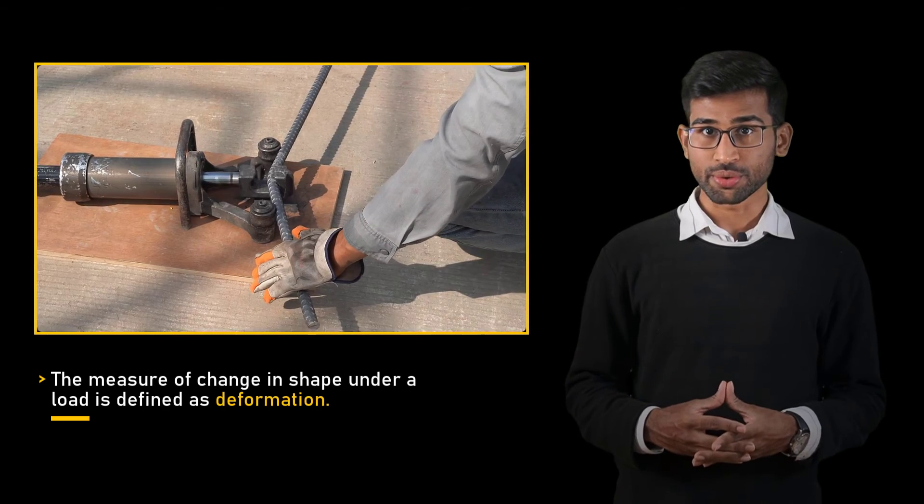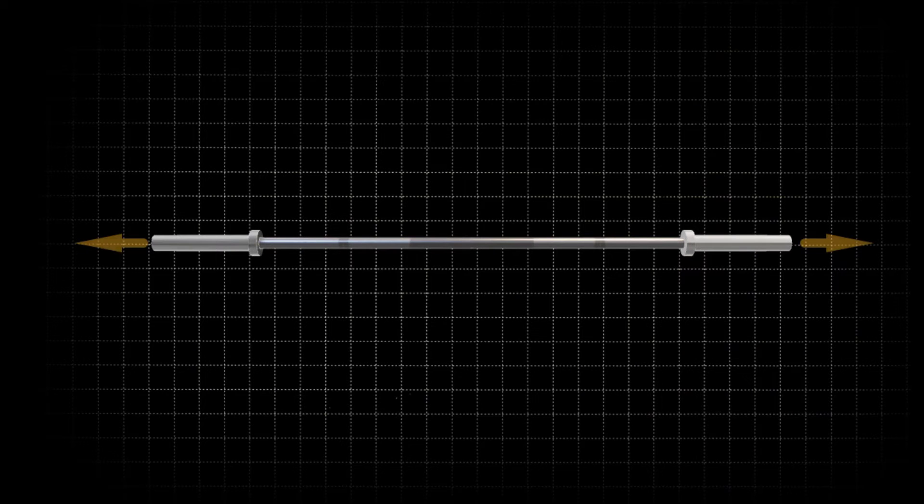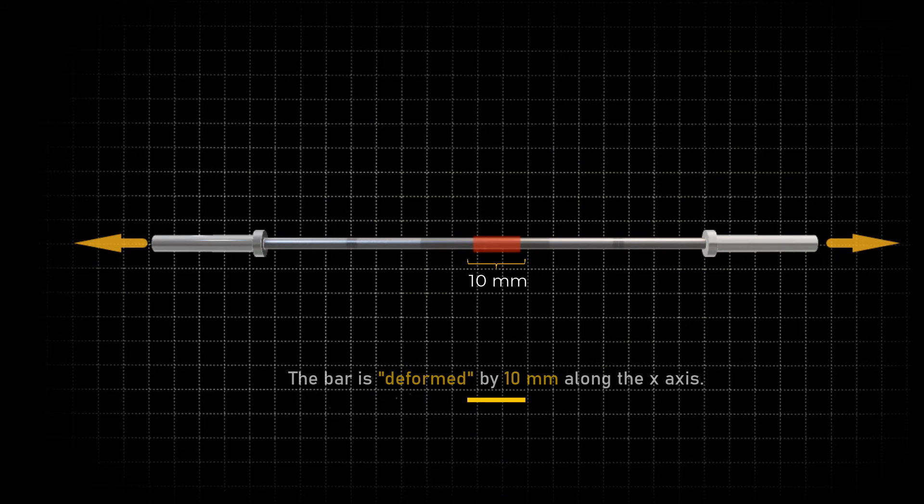The measure of change in shape due to its load can be termed as deformation. For example, if we apply load to this 1 meter bar and it gets elongated in x direction, say by 10 mm, we say that the bar got deformed by 10 mm along the x axis.